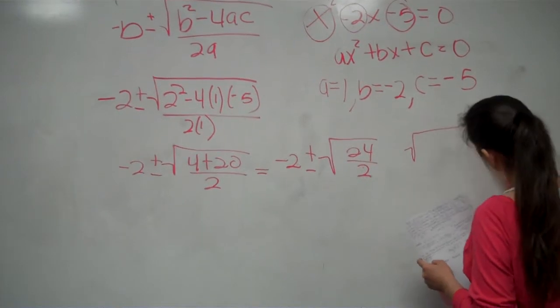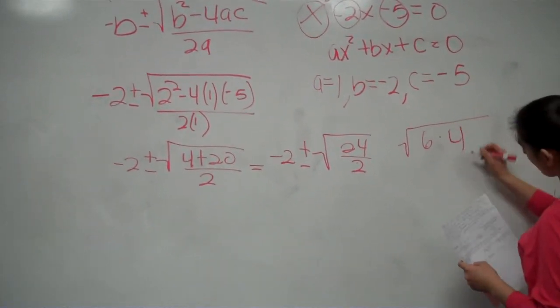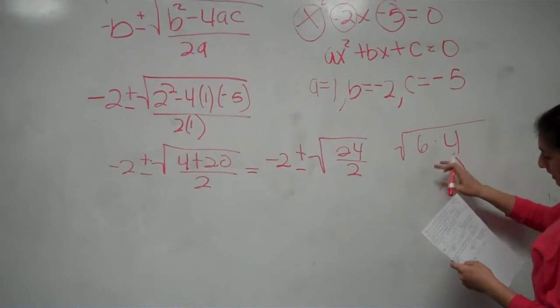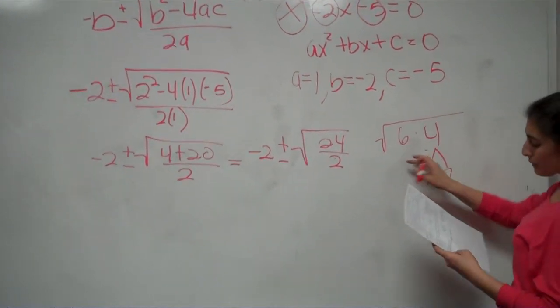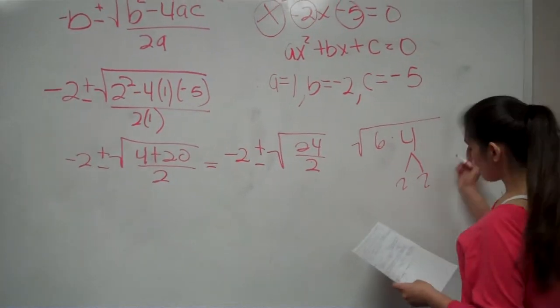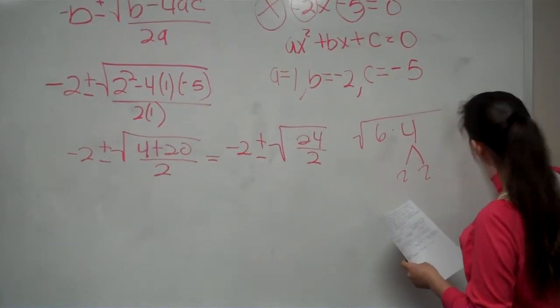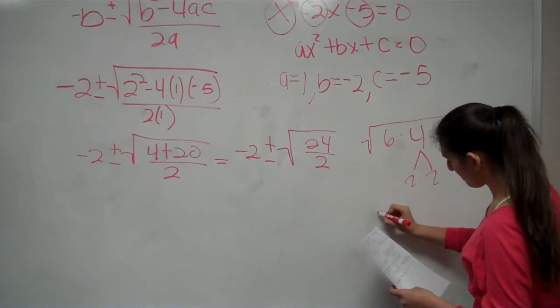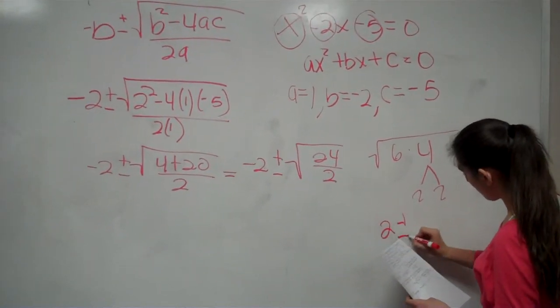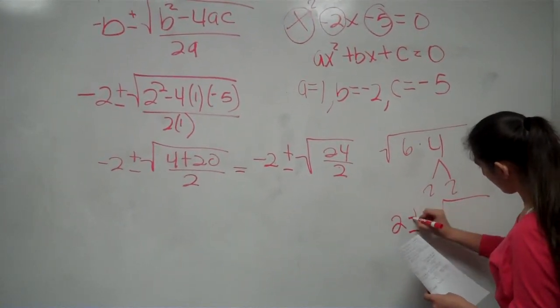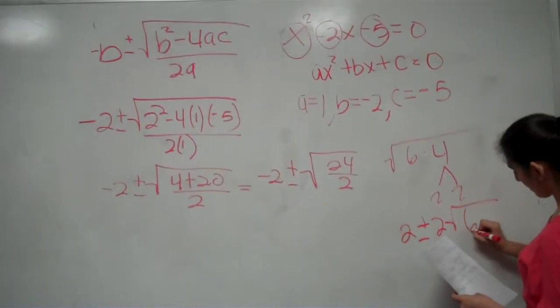So 24 factors as 6 times 4. From 4 you get 2. The square root of 6 remains unchanged. So you get 2 plus or minus 2 square root 6, over 2.